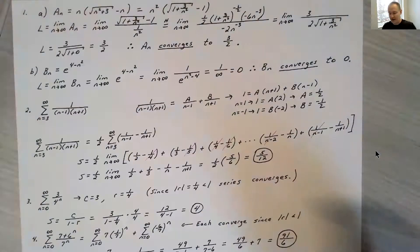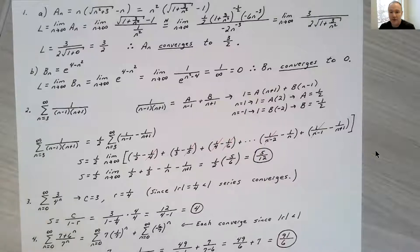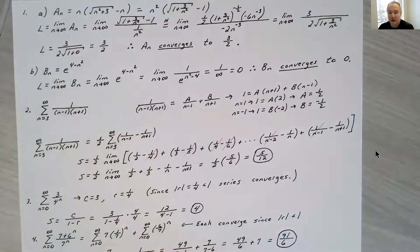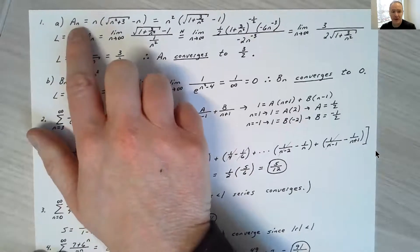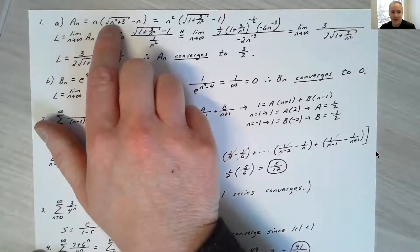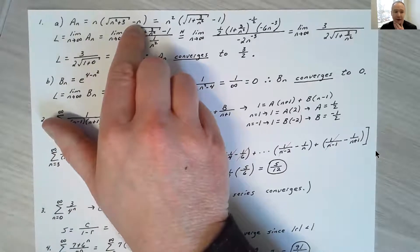For the first question on sequences, the way we know a sequence converges is if we can take the limit of the general term of the sequence. If that limit goes to any finite value, then the sequence converges. If it goes to infinity or some undefined value where it's not going to any one value, then it diverges. In the first problem, the general term a_n equals n times the square root of n squared plus three, minus n.